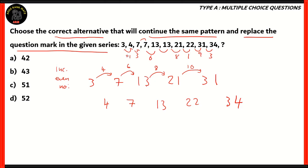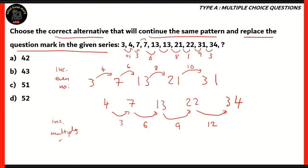For the even-position series: 7 minus 4 is 3, 13 minus 7 is 6, 22 minus 13 is 9, 34 minus 22 is 12, and so on. The even positions in the original series are related by increasing multiples of 3. As you can see, you have two separate series which are clubbed together, so when you look at it as a single series it does not make sense. However, if you separate them into two series, they make perfect sense.